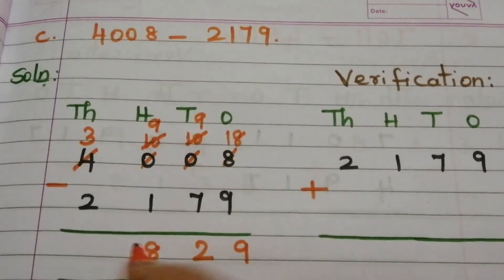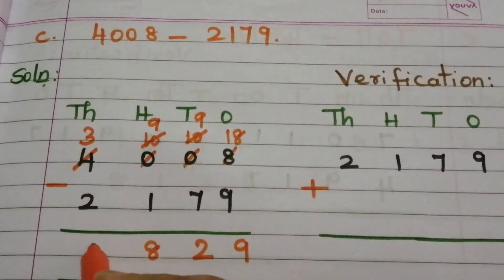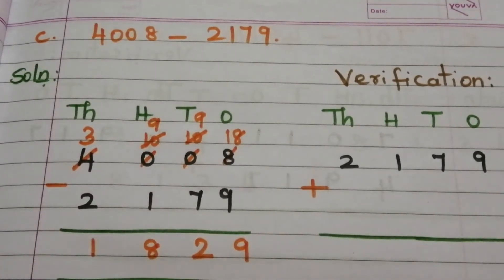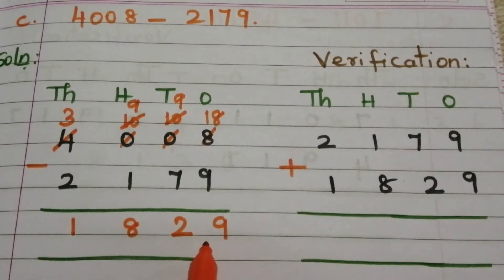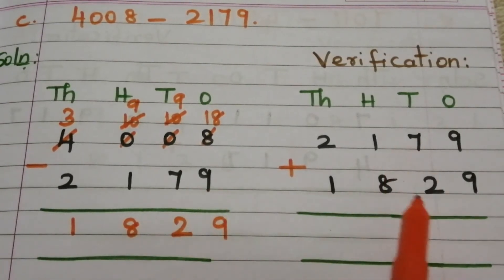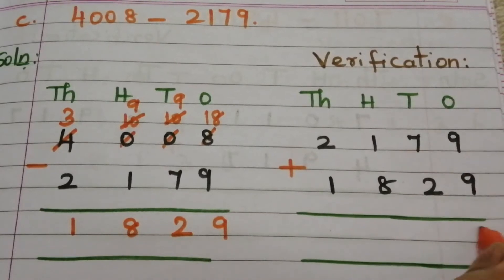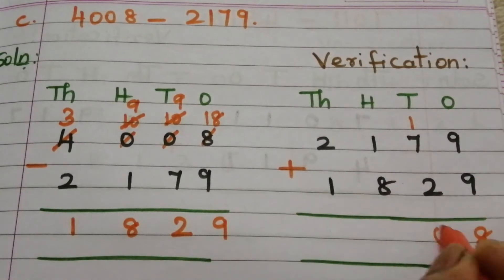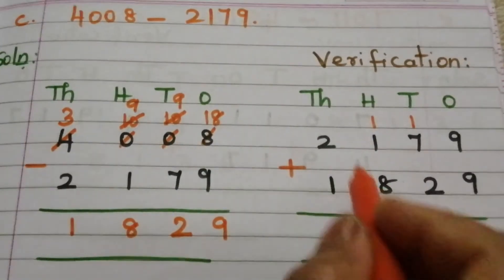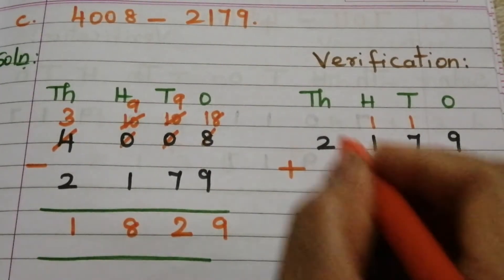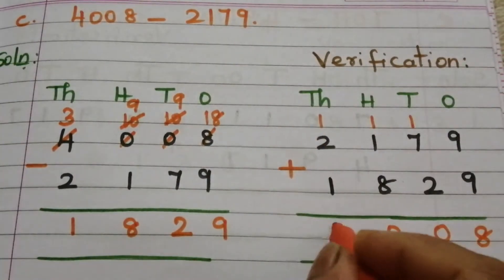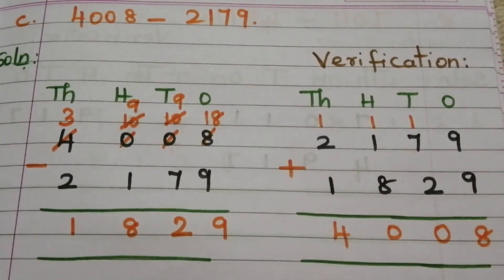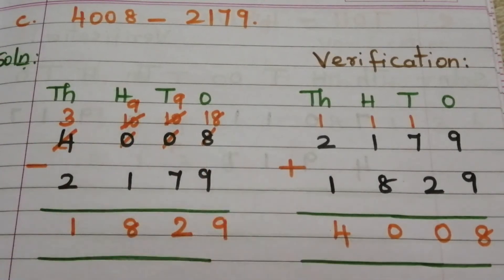18 minus 9 is 9, 9 minus 7 is 2, 9 minus 1 is 8, and 3 minus 2 is 1. So the answer is 1829. Now we add this answer to the subtrahend: 9 plus 9 is 18 — write 8, carry 1. 7 plus 2 is 9, plus 1 is 10 — write 0, carry 1. 8 plus 1 is 9, plus 1 is 10 — write 0, carry 1. 2 plus 1 is 3, plus 1 is 4. Our answer is equivalent to the minuend, so our subtraction is correct.